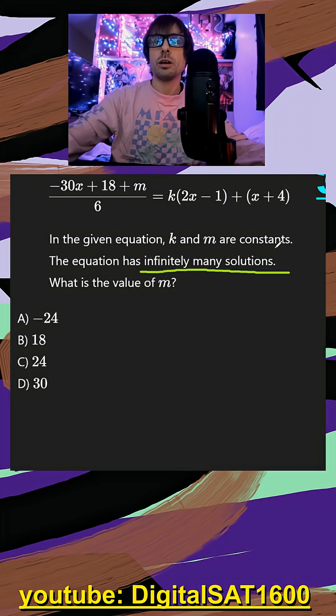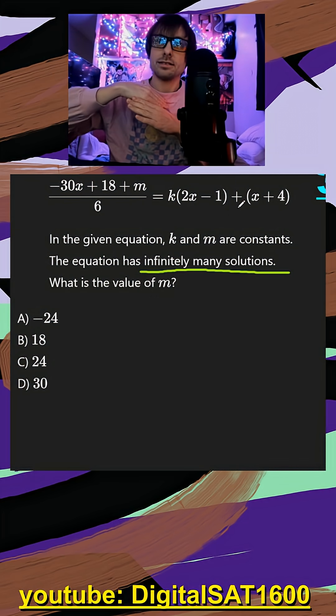So in these infinitely many solution problems, if there's only one letter, like just an m or just a k, you can put this equation in Desmos, put this one separately, add a slider for your extra letter, and you just slide that until your two lines line up.